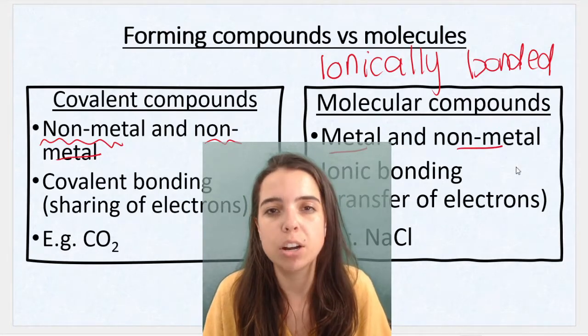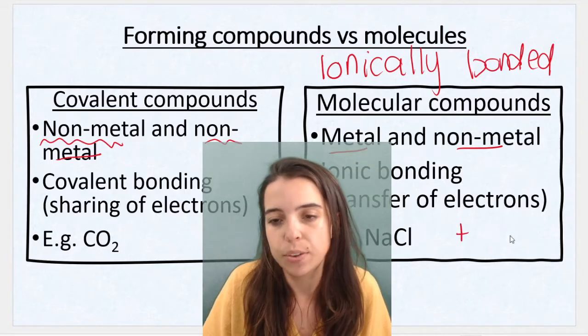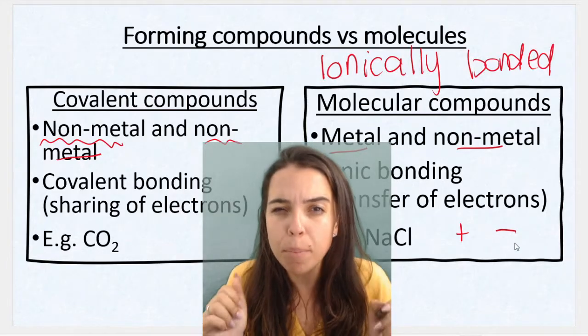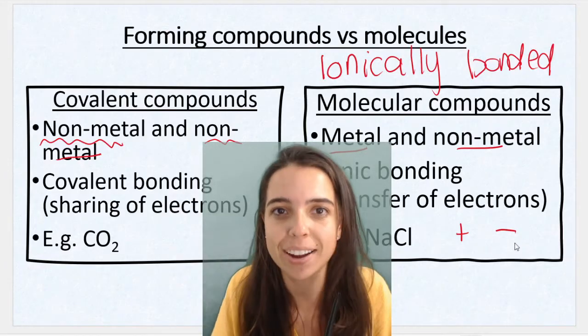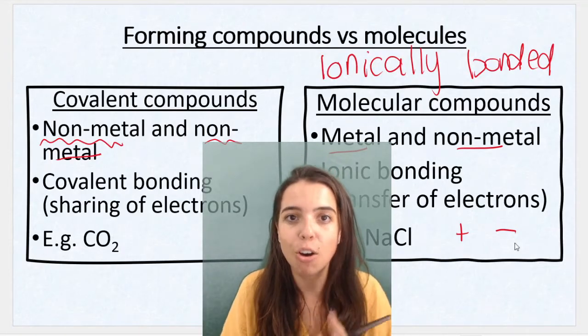And if you learned about this in grade nine, you would have learned that metals form positive ions, which we'll get to in the next video, and non-metals form negative ions. And what do we know about positives and negatives? They attract. And that's why bonding takes place.